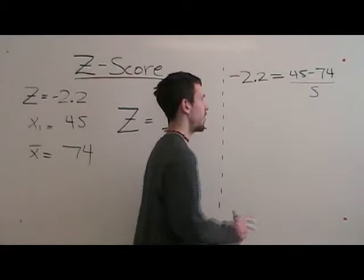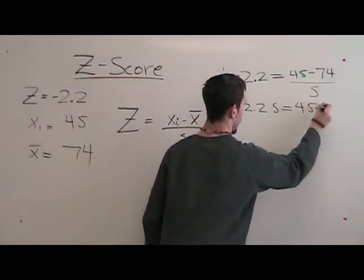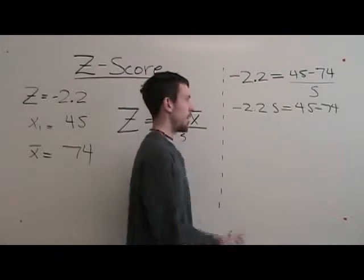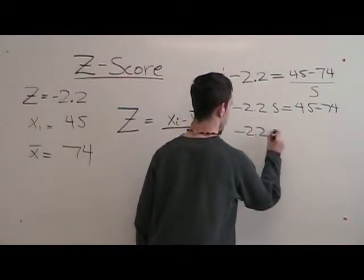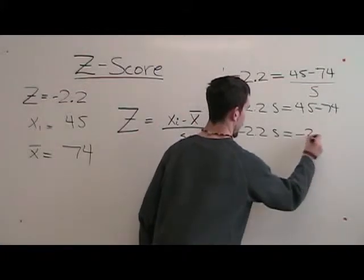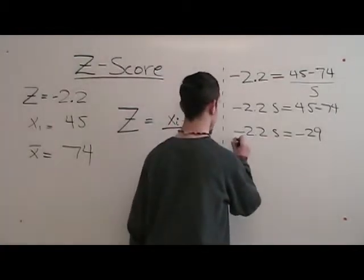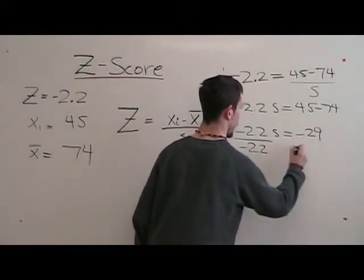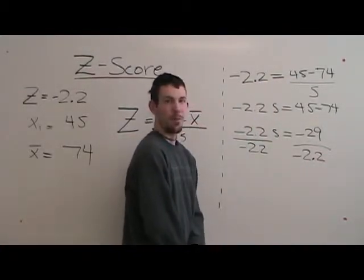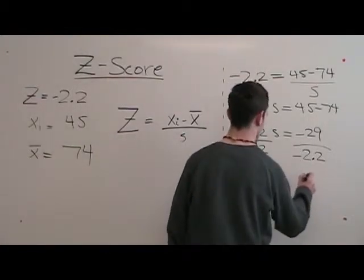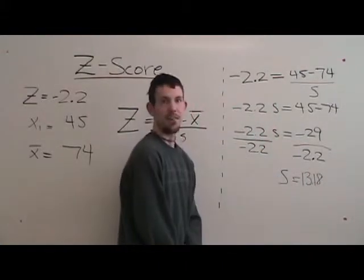Negative 2.2 times s is negative 2.2s. The next step is subtract 45 minus 74. Then divide both sides by negative 2.2. Negative 29 divided by negative 2.2 is 13.18. That is how you find the standard deviation.